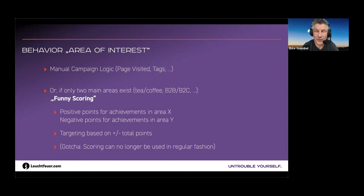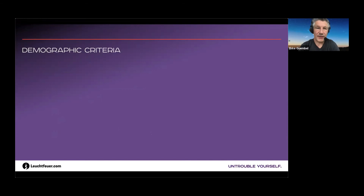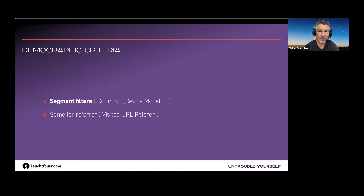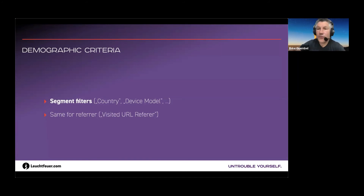Last up is demographic criteria — really simple. You can do segment filters on things like device model: Apple devices, iPhones specifically, or mobile phones generically. You can also act on country, which may be derived from the IP address, and the referrer. You can create segments based on the referrer — for instance, if the user comes from an affiliate site, you might want to act accordingly.